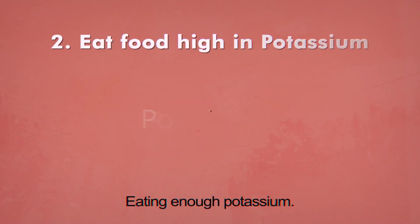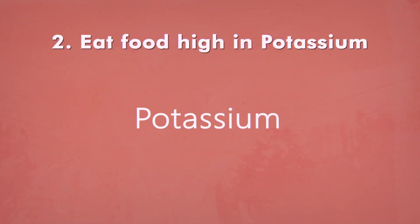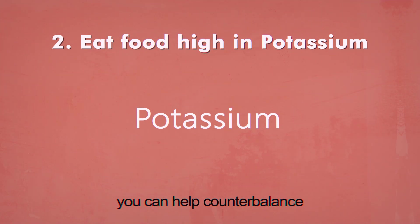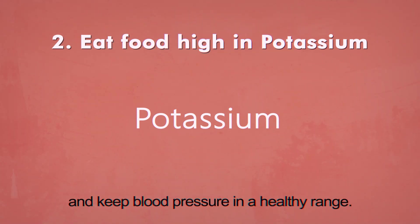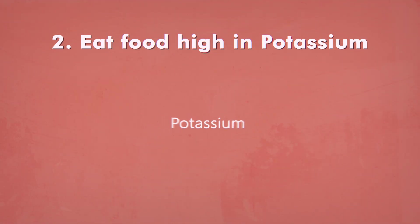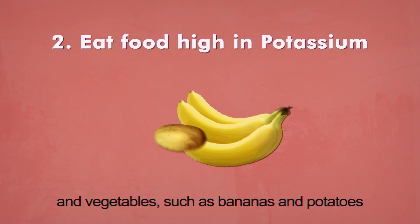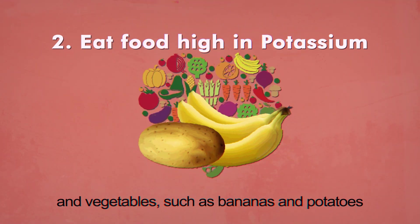Eating enough potassium. By consuming enough potassium, you can help counterbalance the negative effects of sodium and keep the blood pressure in a healthy range. Potassium can be found in many fruits and vegetables such as bananas and potatoes.